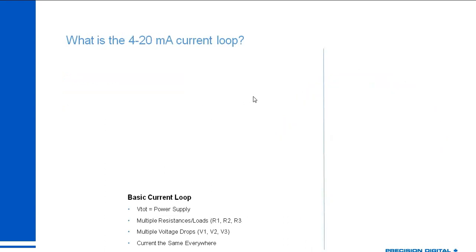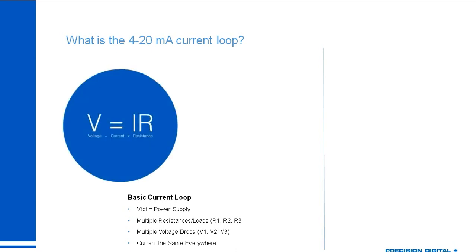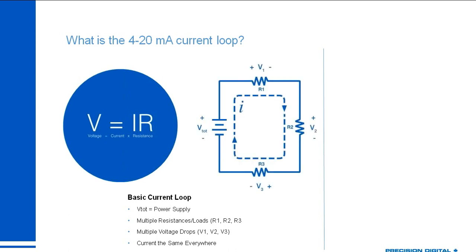Let's dive right into the content: what is a 4-20mA current loop? It's a current loop, and to understand how it works, I want to touch on the only equation we'll discuss today: V = IR. That's the fundamental electrical engineering equation — voltage is equal to current times resistance. Anytime you have one, you want to understand how they interact with one another.